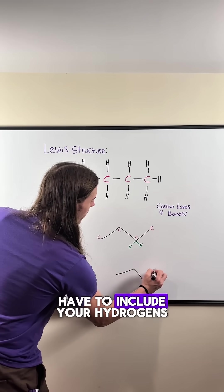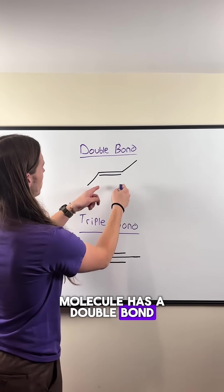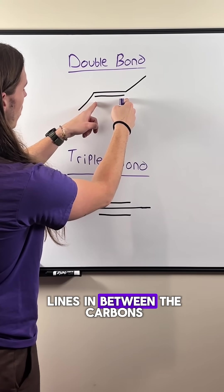The only time you have to include your hydrogens is if it's bonded to a heteroatom like oxygen. If your molecule has a double bond, there will be two lines in between the carbons.